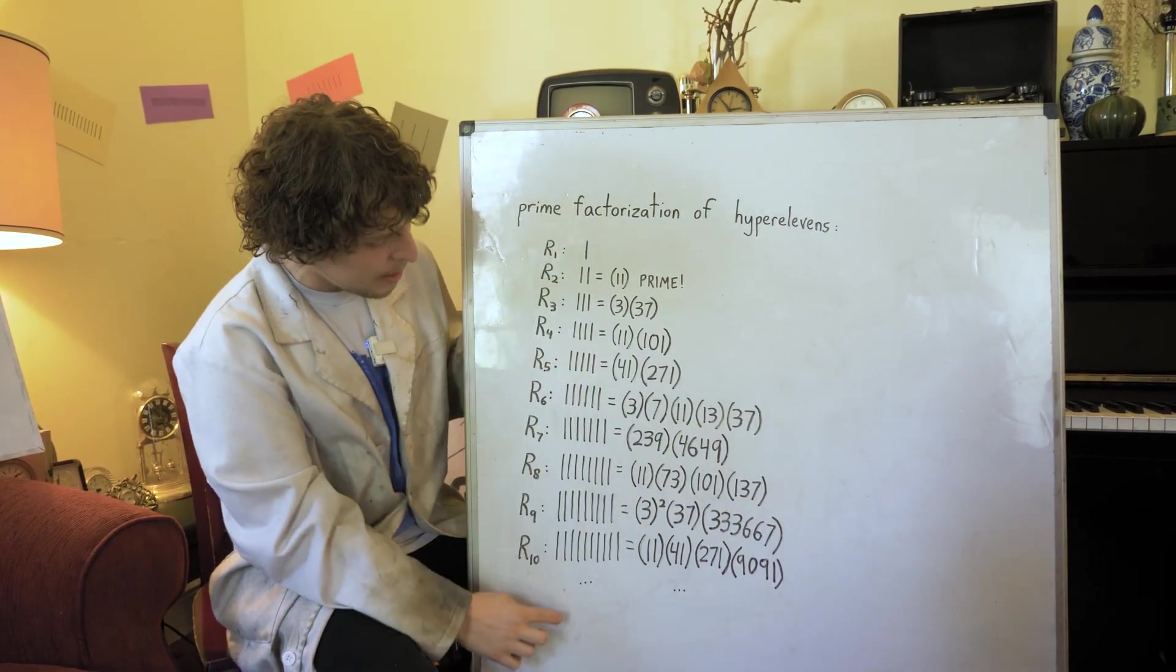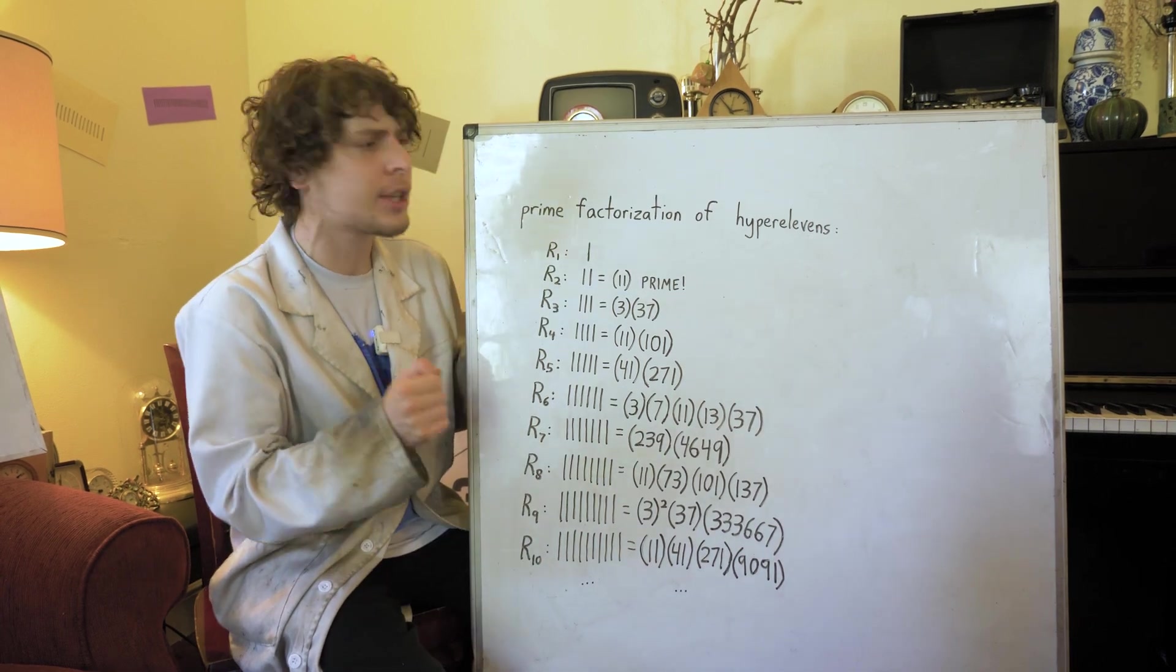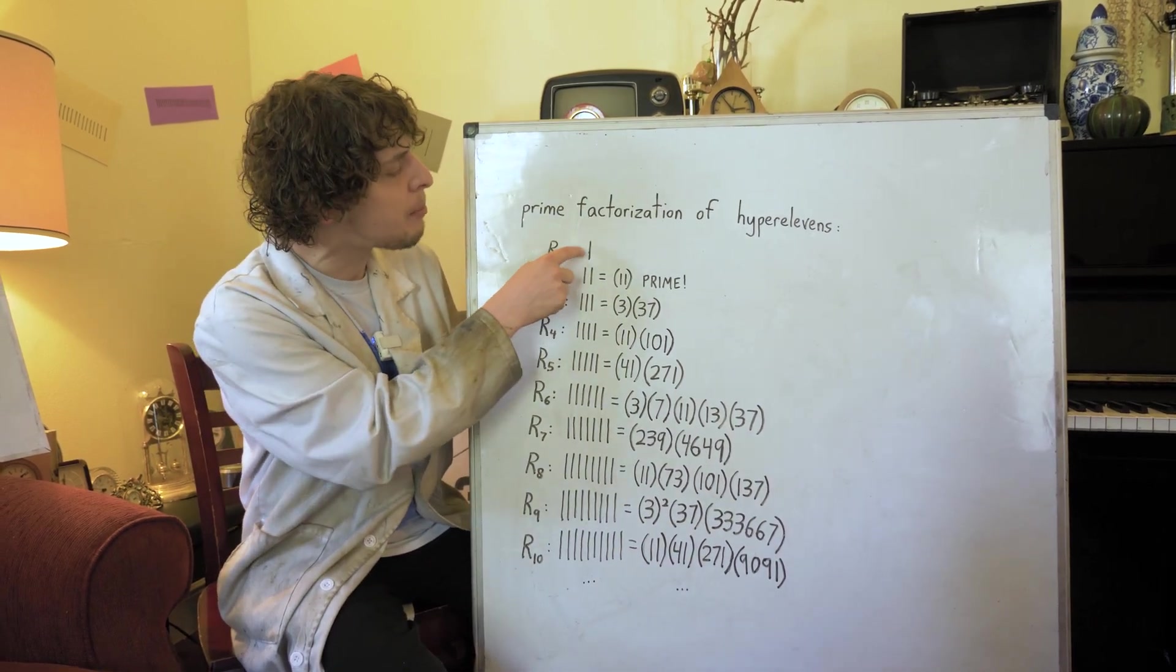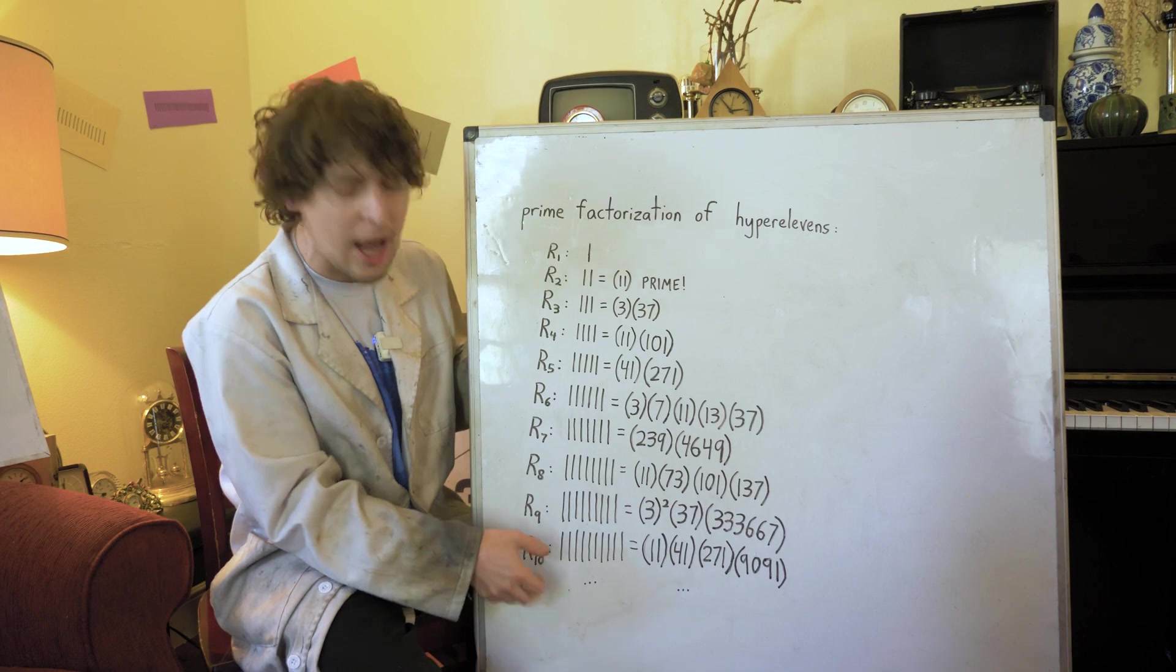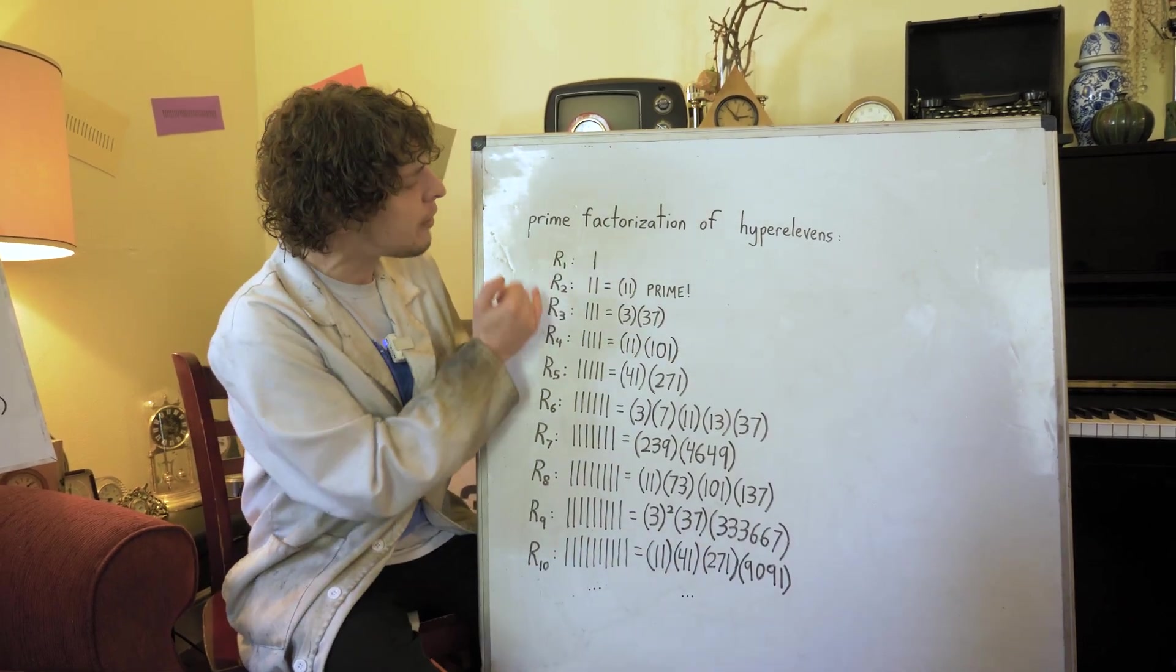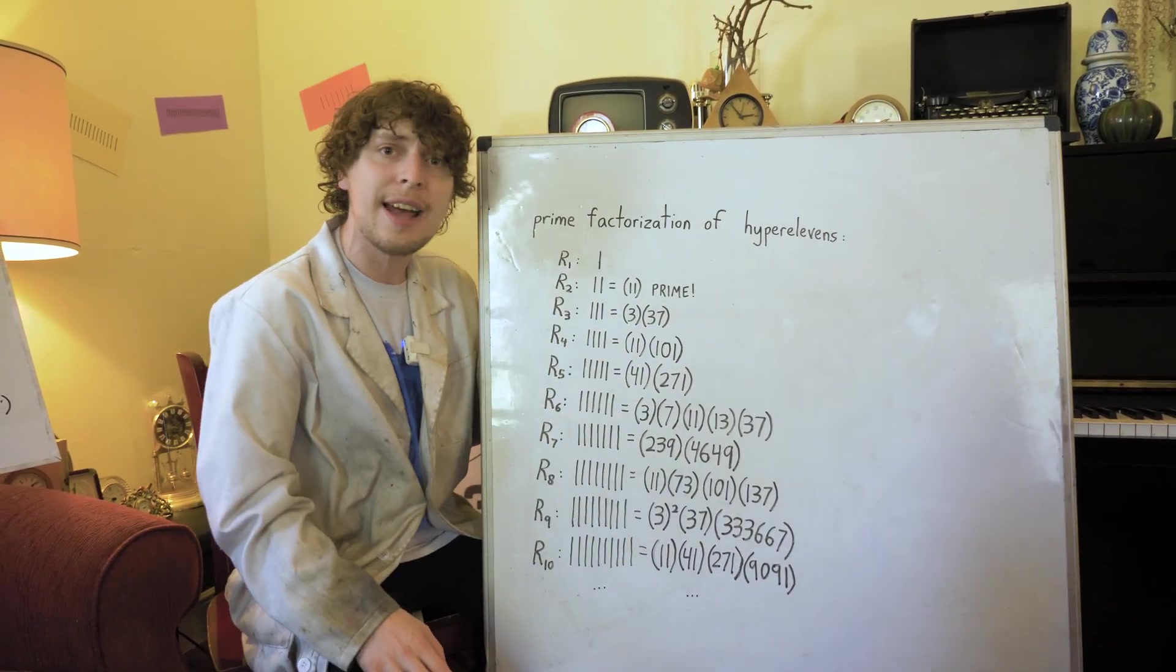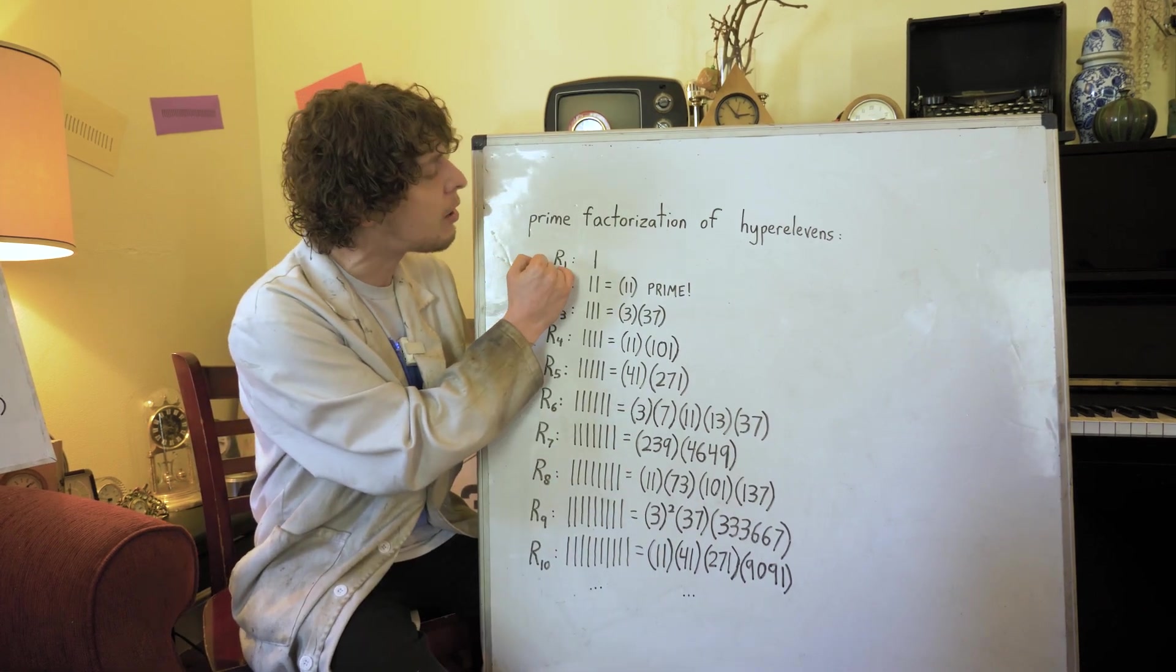So here's our first 10 hyper 11s, or as we're sometimes going to call them, R, and then the number of ones that make them up. That'll help when we describe really long ones. It's a convention for the word rep unit, but we can pretend that it stands for hyper 11.